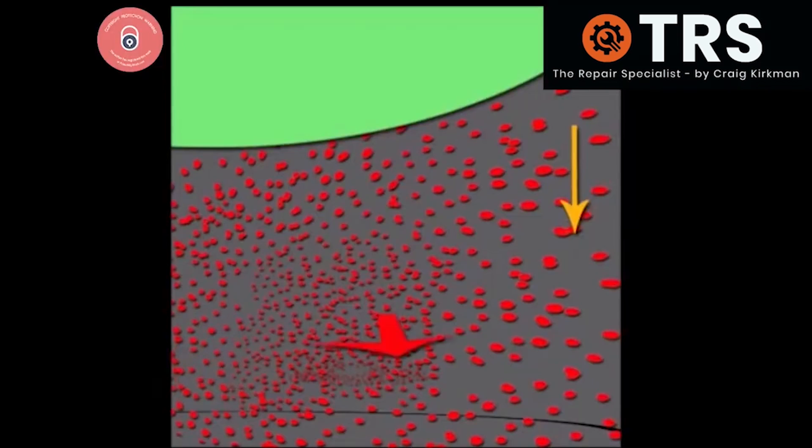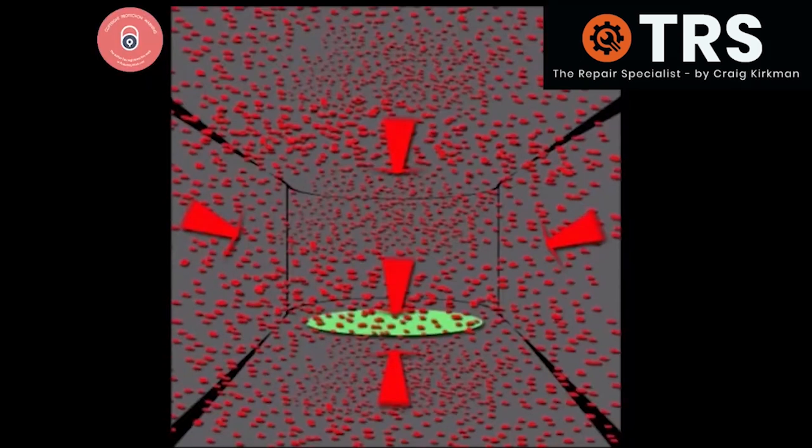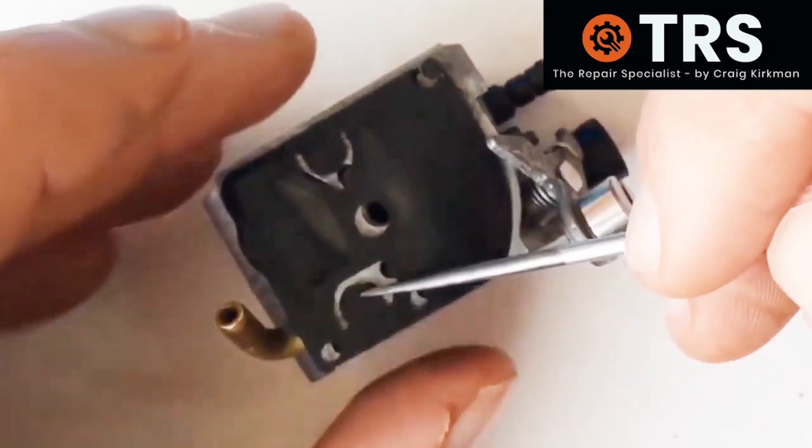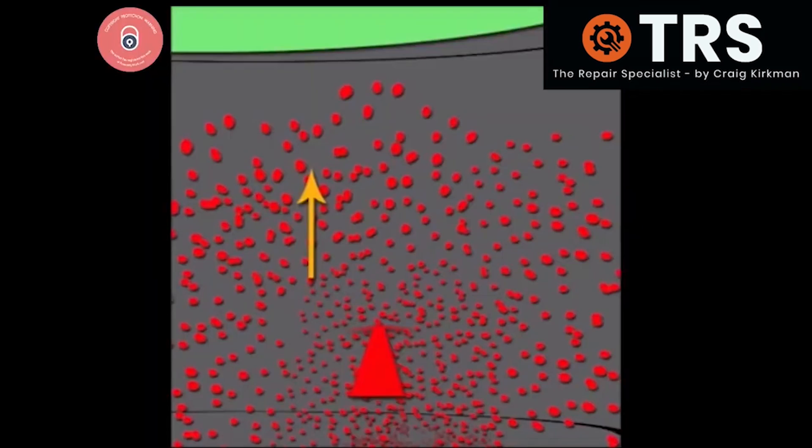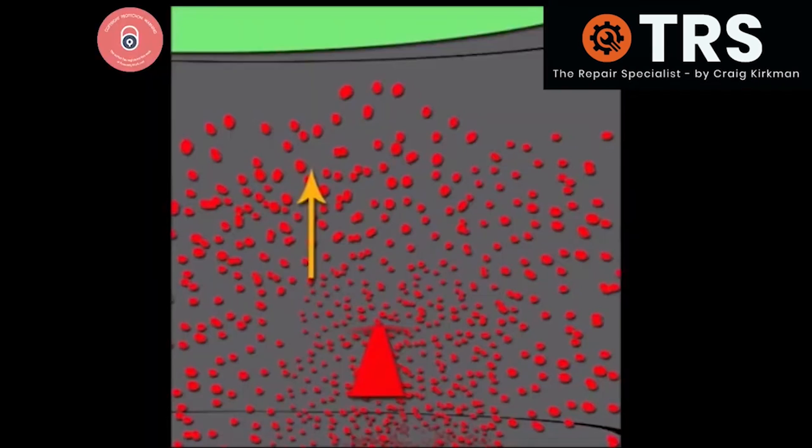And any fuel wanting to go back the way it came is immediately stopped by that one way valve flap it's just come through. So under normal circumstances, when the fuel pump diaphragm lowers and raises thousands of times a minute, a correct functioning valve flap should ensure that it maintains that flow this way through the chamber.